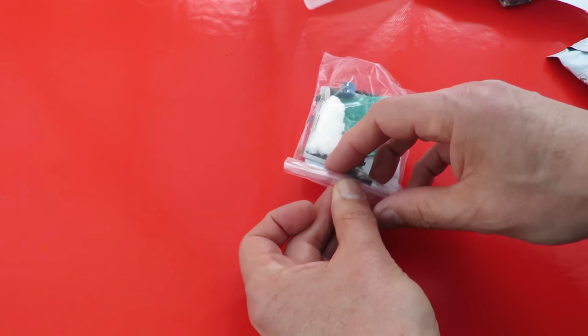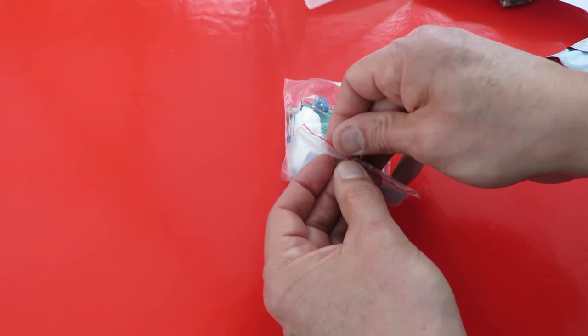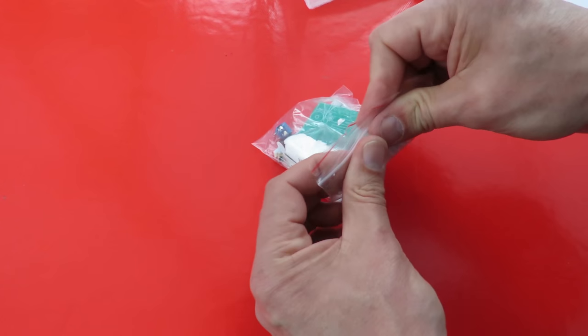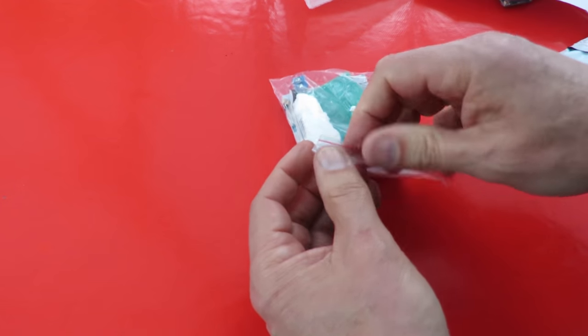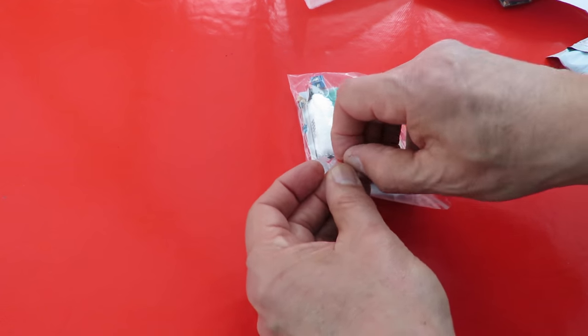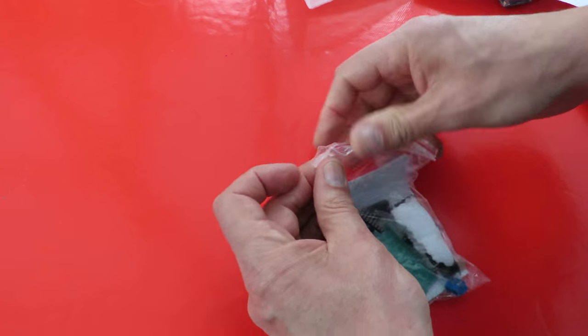Most of the kits you get are simple ones that you plug into potatoes or lemons or something like that, and they're not really kits as such, they're just a ready-made circuit that uses the lemon or the potato as a battery.